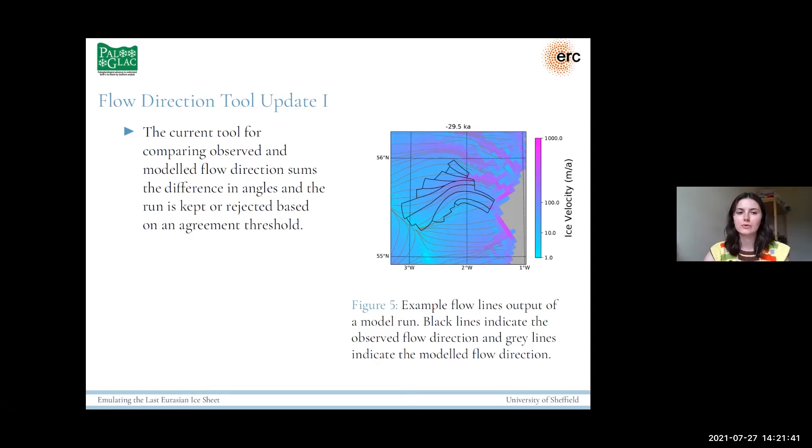So we've been looking to start with updating the flow direction tools, the one that compares drumlins to the model simulations. Currently the tool available just compares the observed and modeled flow directions and takes that difference in angles and sums that across the whole ice sheet for each of the different drumlins. And then the run is either kept or rejected based on an agreement threshold. We want to create a new tool that uses the Von Mises distribution, which is a circular analog of the normal distribution, to compare the angle difference to this distribution and form a likelihood score for each run. And I've got an example on the right here. The grey lines are the modeled flow direction given by the numerical model. And then these black lines are groups of drumlins called flow sets, which indicate the observed flow direction.